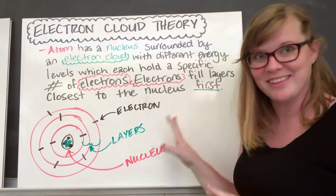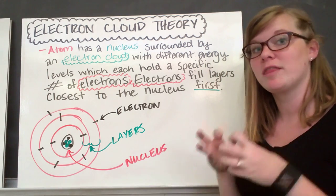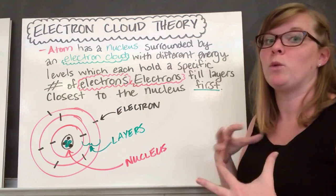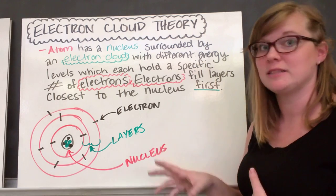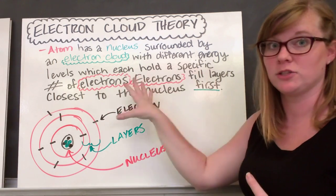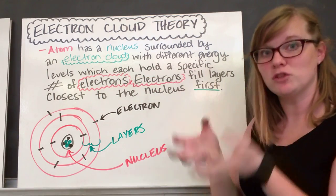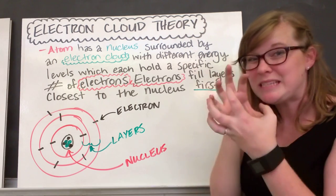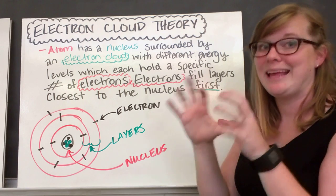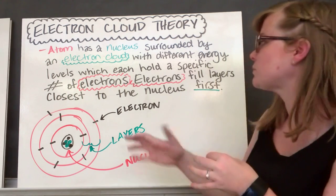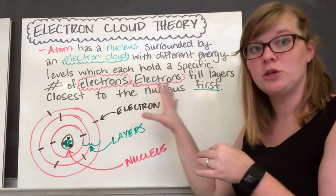Electron cloud theory — this is our big impressive phrase. Electron cloud theory is our modern theory of an atom; this is the way we know atoms look and are shaped today. It tells us that an atom has a nucleus surrounded by an electron cloud, but that electron cloud has different energy levels, and each of those energy levels can hold a specific number of electrons. Electrons orbit the nucleus in their energy level.